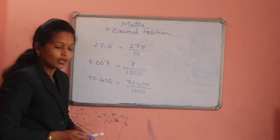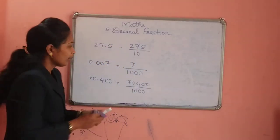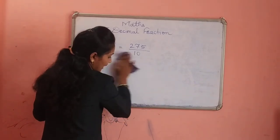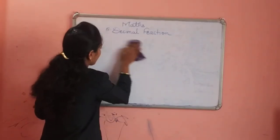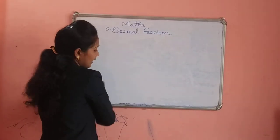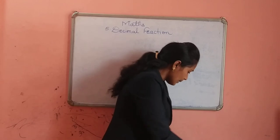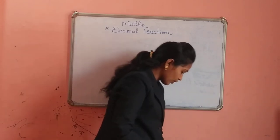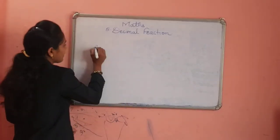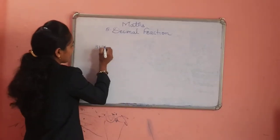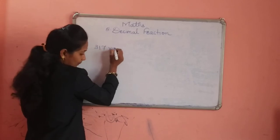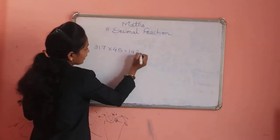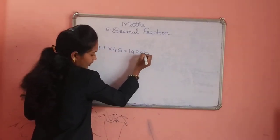This is the simple way to write the common fraction with the help of a decimal fraction. Today we are also going to take Practice Set 16. In Practice Set 16, simple examples are there. If 317 multiplied by 45 is equal to 14,265, then they ask what is 3.17 multiplied by 4.5.